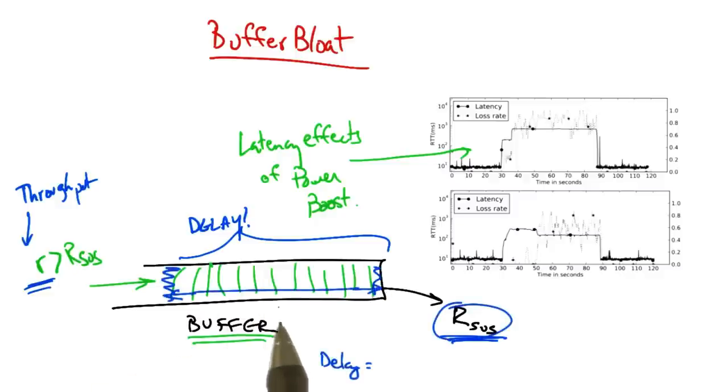The delay that the packet will see in the buffer is the amount of data in the buffer divided by the rate that the buffer can drain.